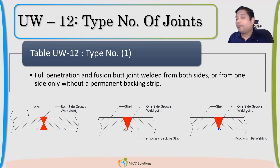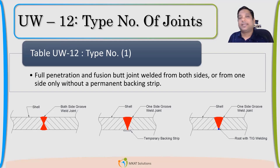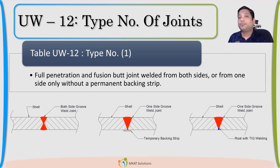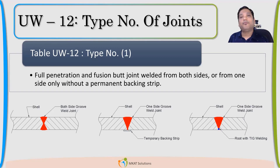So what type of weld can I have if I want joint efficiency as 1? This is the first type. I need to weld from both sides — both sides meaning a butt joint. I cannot have a corner or lap joint; I need a butt weld joint and I have to ensure full penetration. That is the utmost requirement.